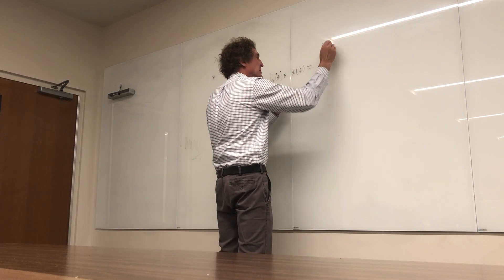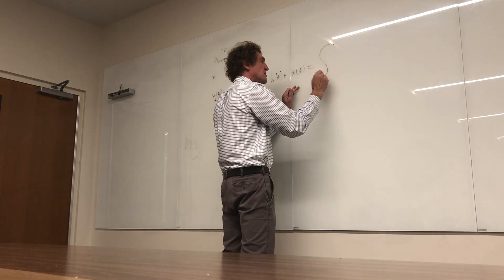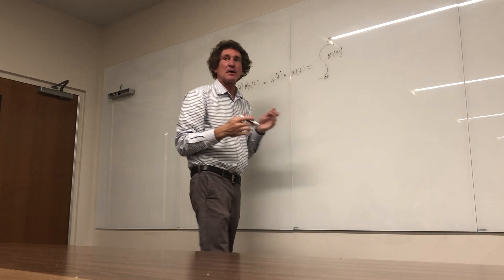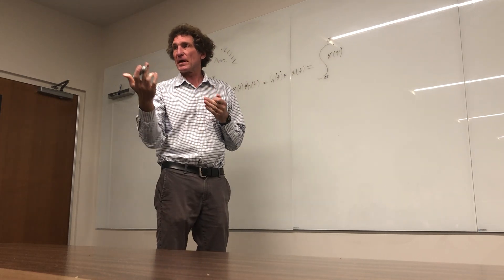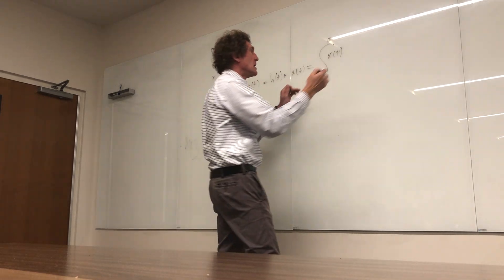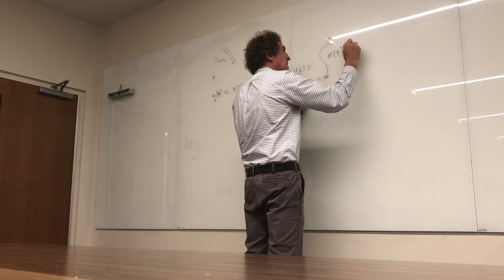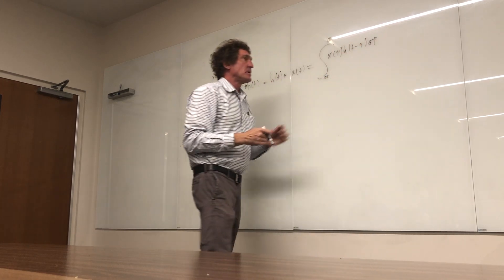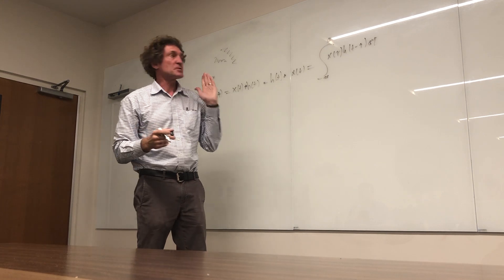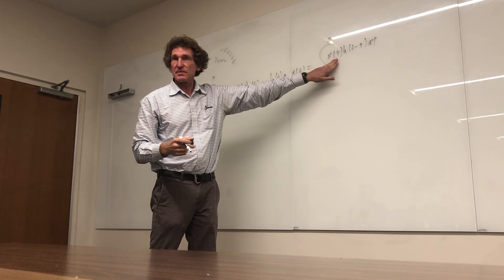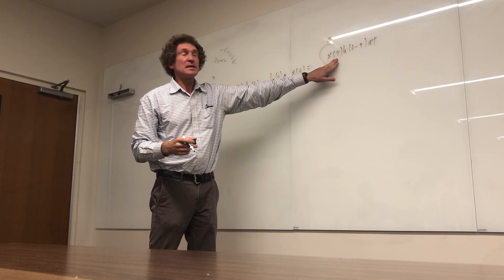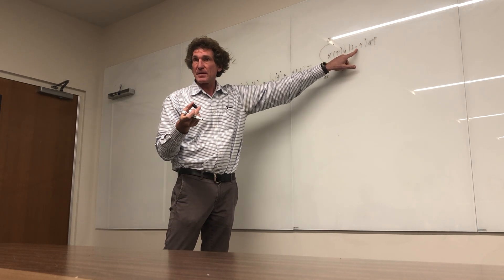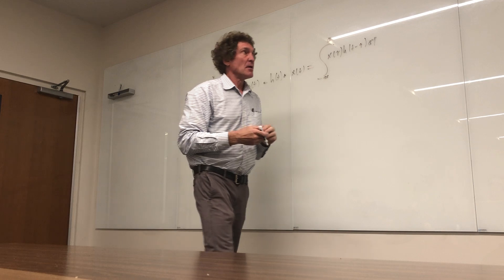The second thing: the fundamental definition is an integral from minus infinity to infinity of x(τ) — I call τ a dummy variable because it's going to be integrated out — times h(t minus τ) dτ. I always tell people: the function that has the most going on, you leave alone as a function of τ. The thing with the least going on, you flip to h(−τ) and then shift it by t.